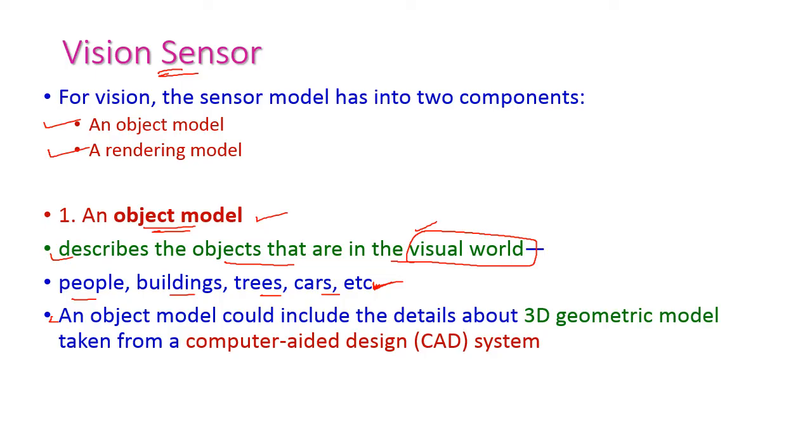An object model could include the details about 3D geometric model taken from CAD system, that is computer aided design system. The object model gives the details about all the objects in the environment.